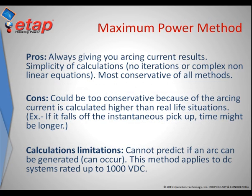The simplicity of the model is what is most beneficial about the maximum power method — it should always give the user results because it is based on the fundamental maximum power theorem. It also provides the user with the most conservative results of the three available methods within ETAP. The con behind this method is that it may not yield an accurate magnitude of the arcing current and will not reflect an accurate operating time of protected devices. Also, it has not been tested or validated for systems rated higher than 1000 volts DC.